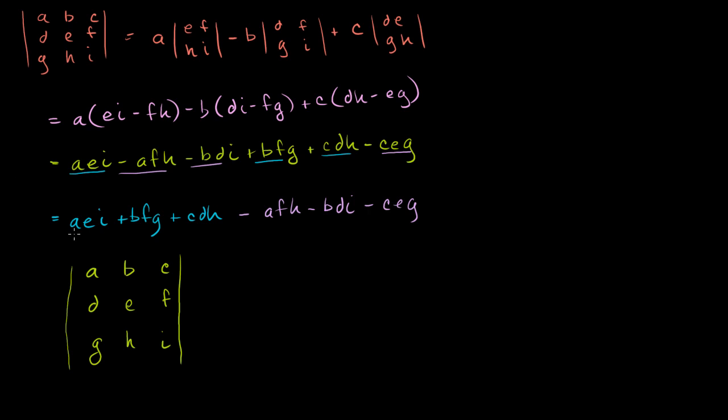AEI is what? AEI is a product of this guy, this guy, and that guy. So you're essentially going along that diagonal right there. Now what is BFG? BFG, you're going this guy, this guy, and then you're going all the way down to this guy. So it's like if you imagine that when you come out of this side, you end up showing up on the other end, it would also be a diagonal.